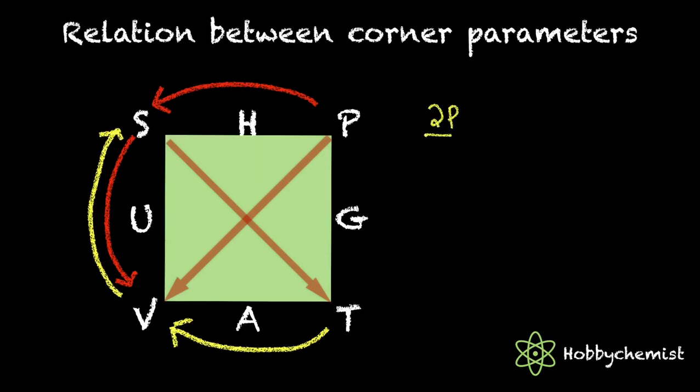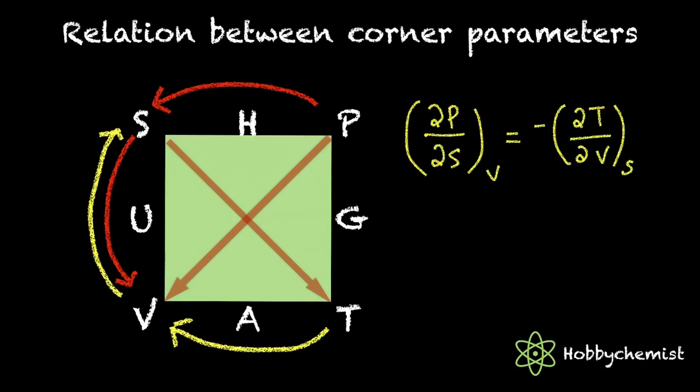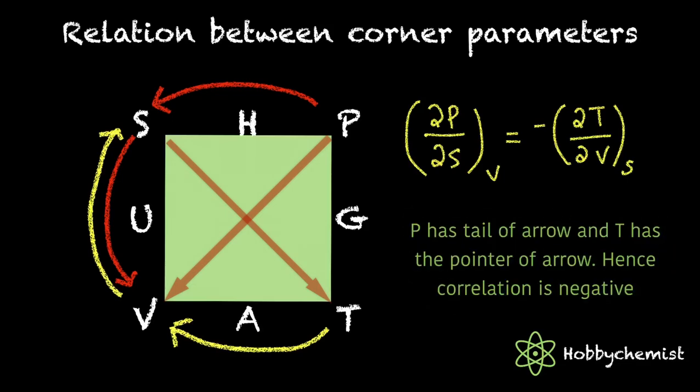Here ∂P/∂S at constant volume equals minus ∂T/∂V at constant entropy. As P has the tail of the arrow and T has the arrow head, the relationship is negative.